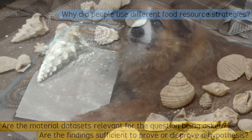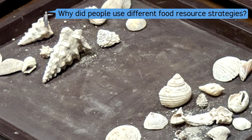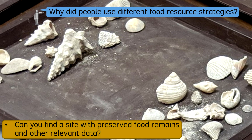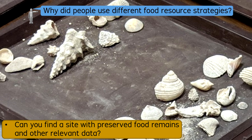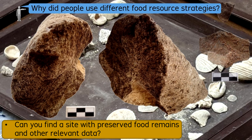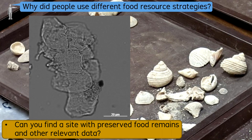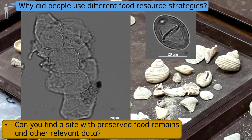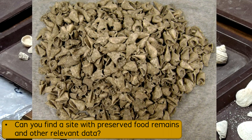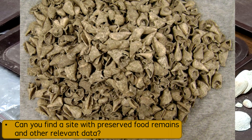If you want to propose a hypothetical explanation about why people use different food resource strategies, then first you would need to find a site or a set of sites with preserved food remains, food processing tools, or other information relevant for identifying the ancient foods and inferring the associated food resource strategies. If you do not have access to a site where you can excavate a relevant dataset, then you might need to rely on pre-existing site collections that always come with limitations.